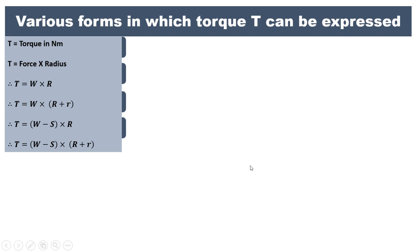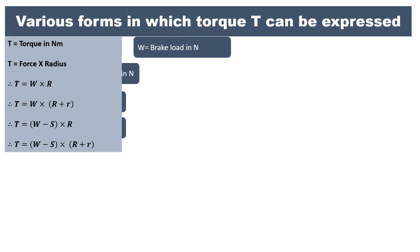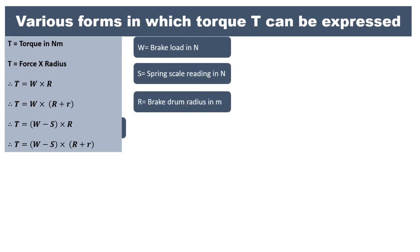Torque is defined as force into radius: T = W × R, where W is the load acting on the brake drum and R is the brake drum radius. If the rope radius r is considered, it becomes R + r. If the spring balance reading S is subtracted (accounting for spring support), torque becomes (W − S) × R, or with rope radius: (W − S) × (R + r). Here W is brake load in Newton, S is spring reading in Newton, R is brake drum radius, and r is rope radius.